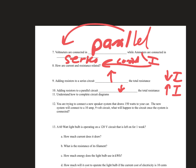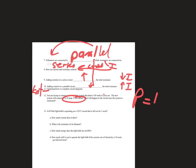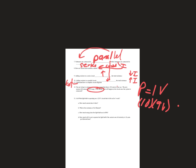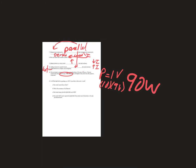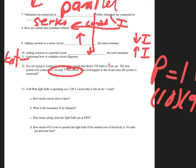For the worked problem: you're connecting a new speaker that draws 150 watts to your car on a 10-amp, 9-volt circuit. Power equals current times voltage: 10 amps × 9 volts = 90 watts. Since the speaker draws 150 watts and the circuit only supplies 90 watts, you can only connect one speaker — two would require 180 watts, which won't work.